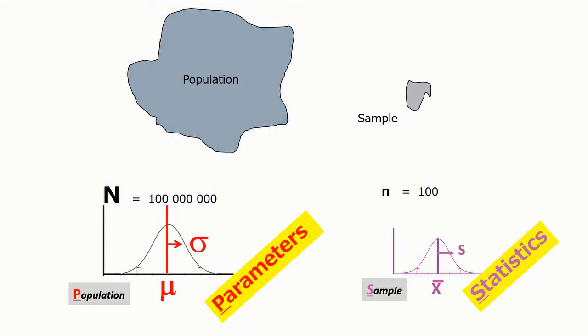Notice that the mean, standard deviation, and number in case of sample are known as statistics, while the mean, standard deviation, and number in case of population are called parameters. So we use statistics to get parameters.